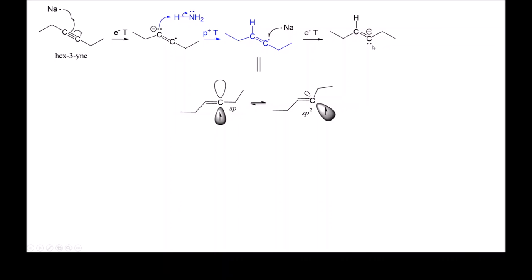You can't stop with an ion, so the fourth step is another proton transfer using ammonia as the acid again. The full sequence is: electron transfer, proton transfer, electron transfer, proton transfer — giving us the trans alkene as the final product. In the next lesson we'll see how to get the cis isomer via catalytic hydrogenation. Today's free radical mediated mechanism with an alkali metal donating its electron gives us the trans alkene.